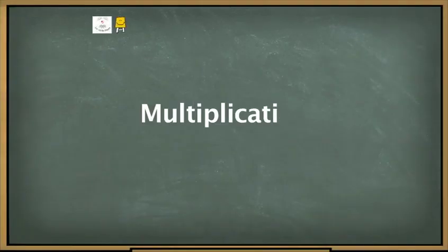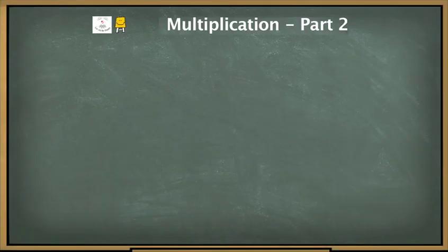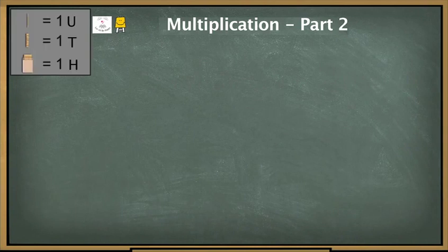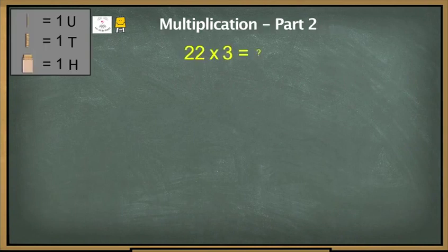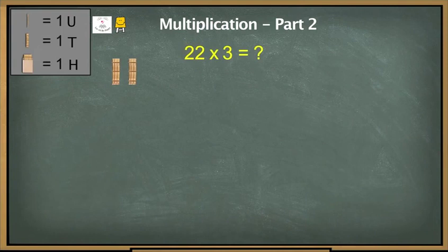Welcome to the second part of this multiplication video series. The problem to be solved is 22 times 3. 22 is 2 tenths and 2 units, and hence we need to multiply 2 tenths and 2 units by 3.